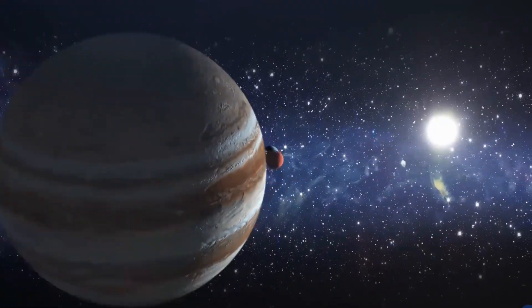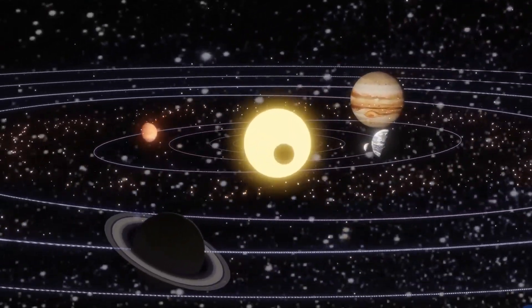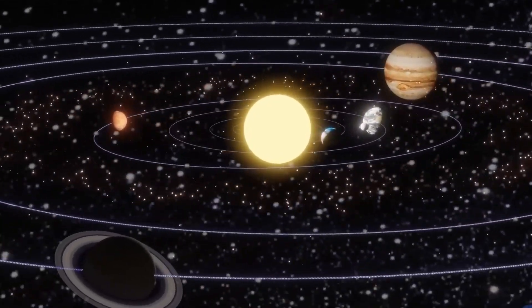This donut-shaped region of icy bodies beyond the orbit of Neptune is home to several leftover celestial elements just like the main asteroid belt.